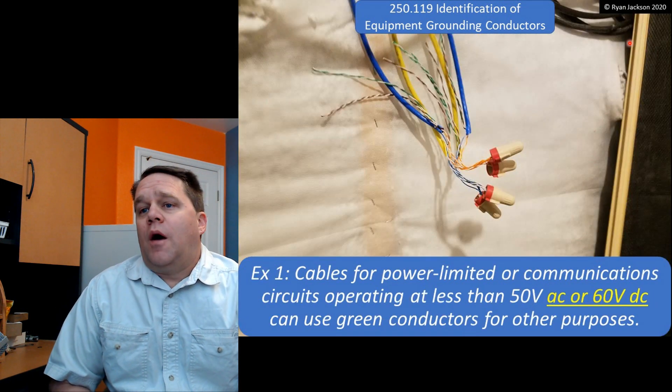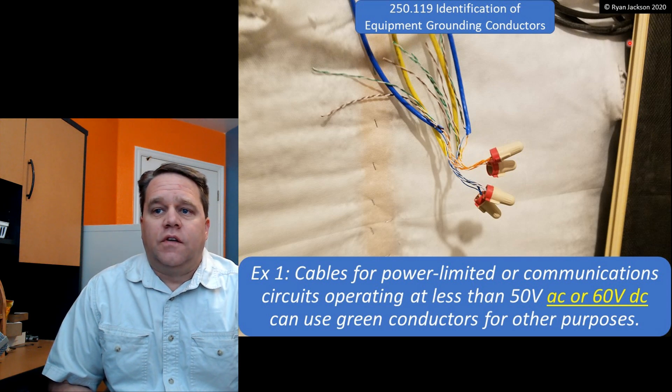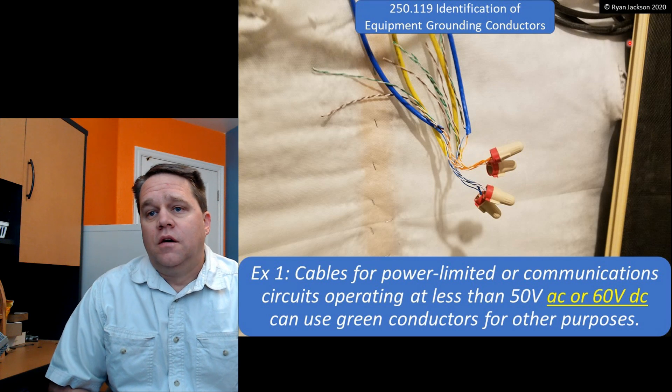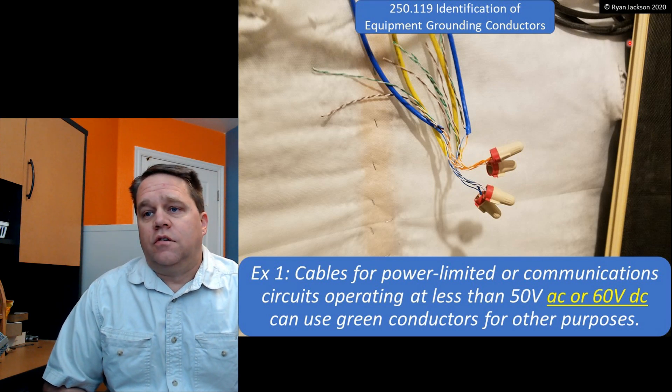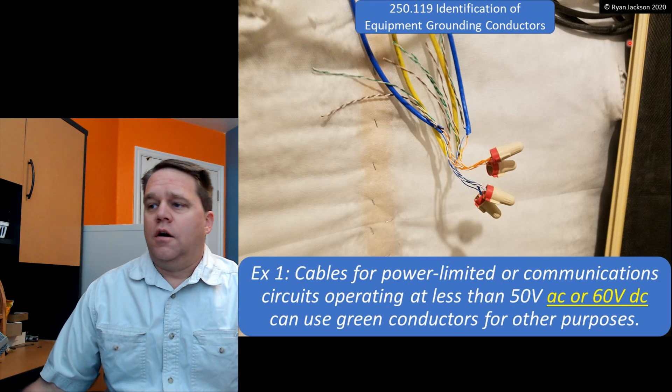The first exception: cables for power-limited or communication circuits that operate at less than 50 volts AC or 60 volts DC can use green conductors for other purposes. This is where it's important to remember how the NEC is structured — we're in Chapter 2, and Chapter 2 applies to Chapters 1 through 7. Chapter 8 does not have to follow the rules in Chapter 2.